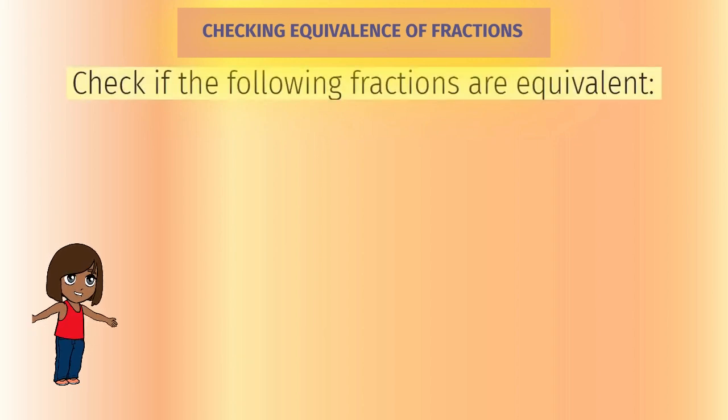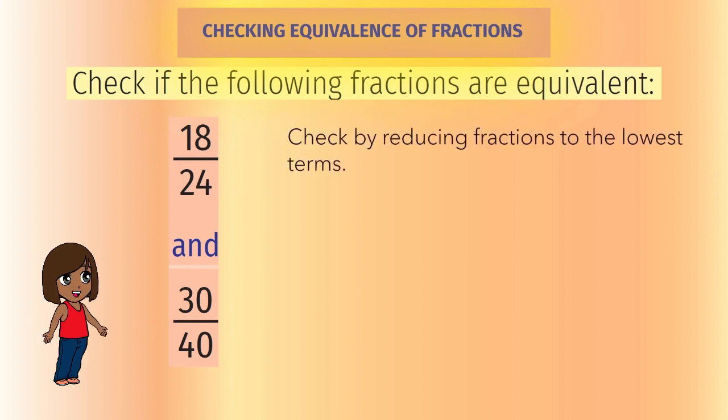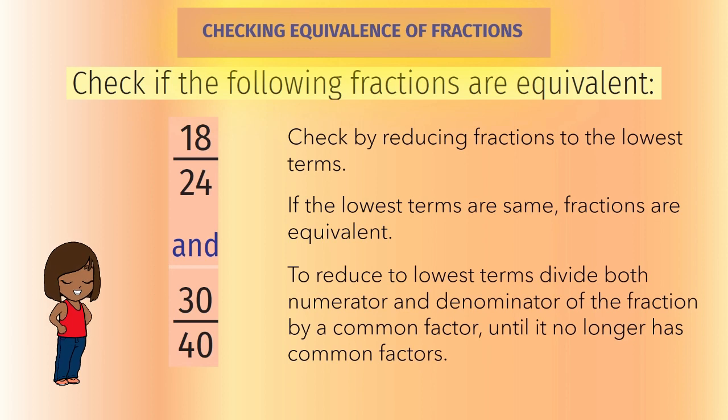18 by 24 and 30 by 40. We will reduce both fractions to the lowest terms. If both of these lowest terms are equal, then the given fractions are equivalent. To reduce to lowest terms, divide both numerator and denominator of the fraction by a common factor until it no longer has common factors.